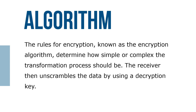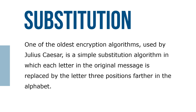The receiver then unscrambles the data by using the decryption key. One of the oldest encryption algorithms, used by Julius Caesar, is a simple substitution algorithm in which the letter in the original message is replaced by the letter three positions farther in the alphabet.